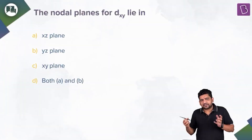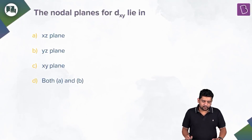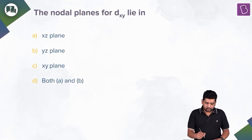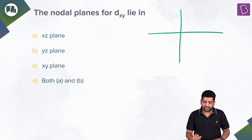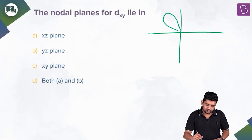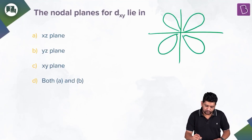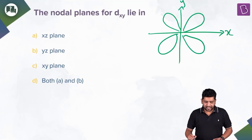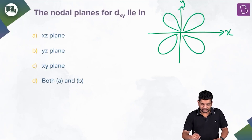This is a conceptual question about nodal planes for the d_xy orbital. Looking at d_xy, we know that three of the five d orbitals have a similar shape — they lie between the axes. Specifically for d_xy, we have the x-axis and y-axis, and as far as the nodal planes are concerned, there are two nodal planes.